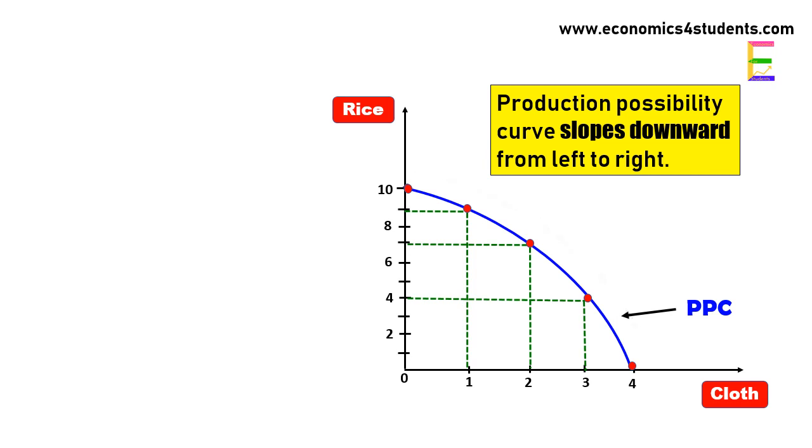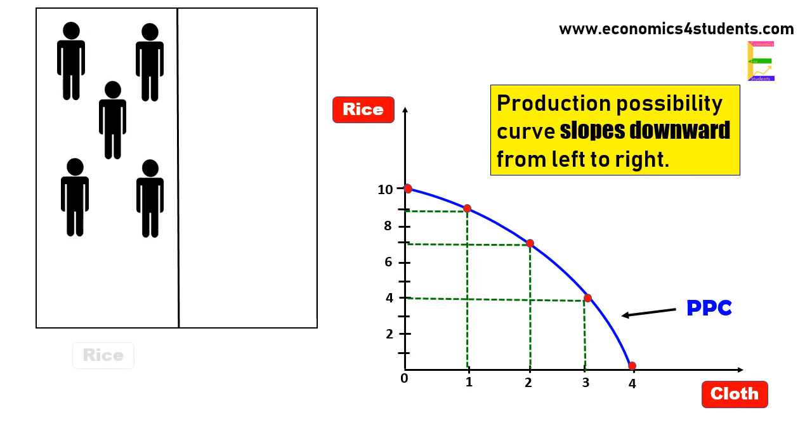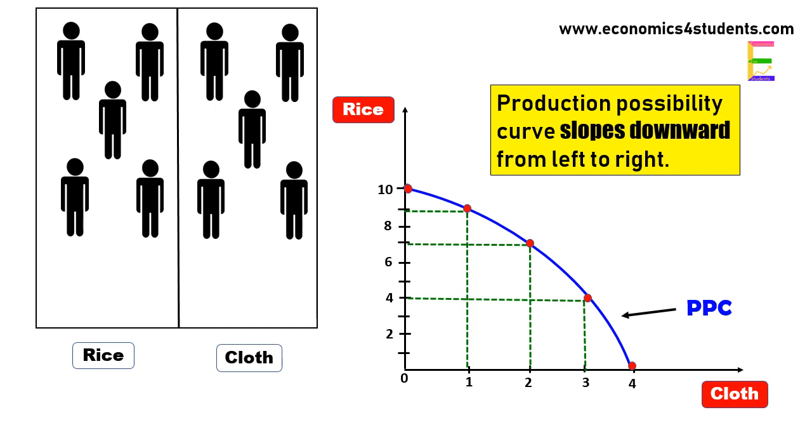Suppose there are ten laborers in the economy. Five are employed in the production of rice and remaining five for the production of cloth, and they are producing two units of cloth and seven units of rice at point C on the production possibility curve.